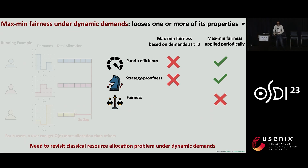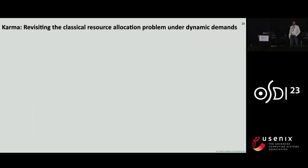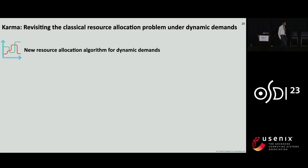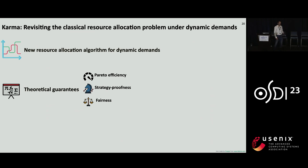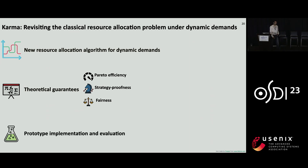This motivates the need to revisit the classical resource allocation problem under dynamic demands — this is exactly what we do in Karma. One key reason maximum fairness is so popular is its simplicity, so we wanted to maintain that simplicity while designing Karma. As a result, we came up with an extremely simple new resource allocation algorithm for dynamic demands. Despite the simplicity, we prove several powerful theoretical guarantees related to the three desirable properties, and demonstrate that these guarantees translate well into practice through a prototype implementation and evaluation.